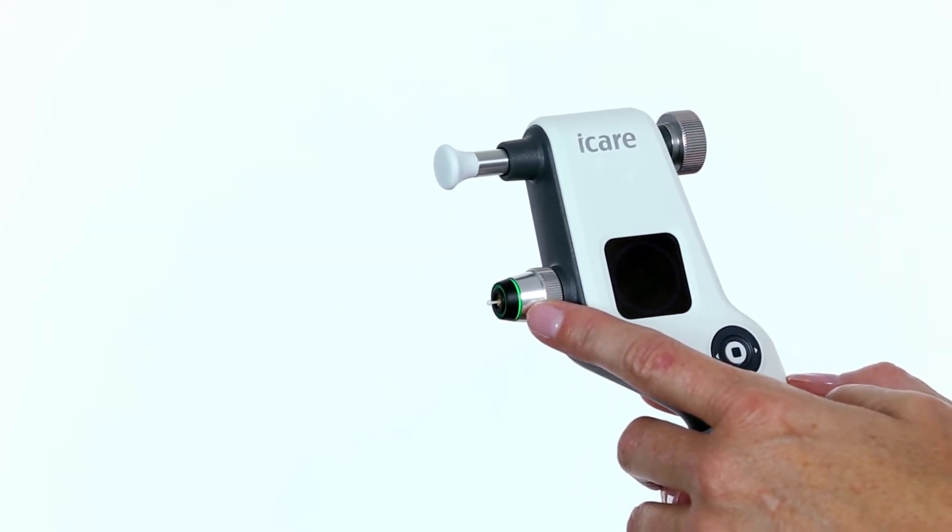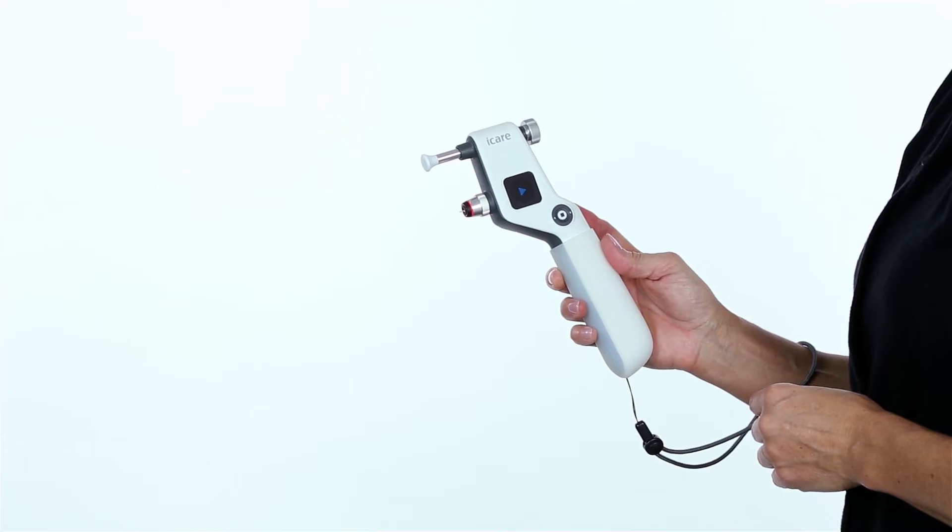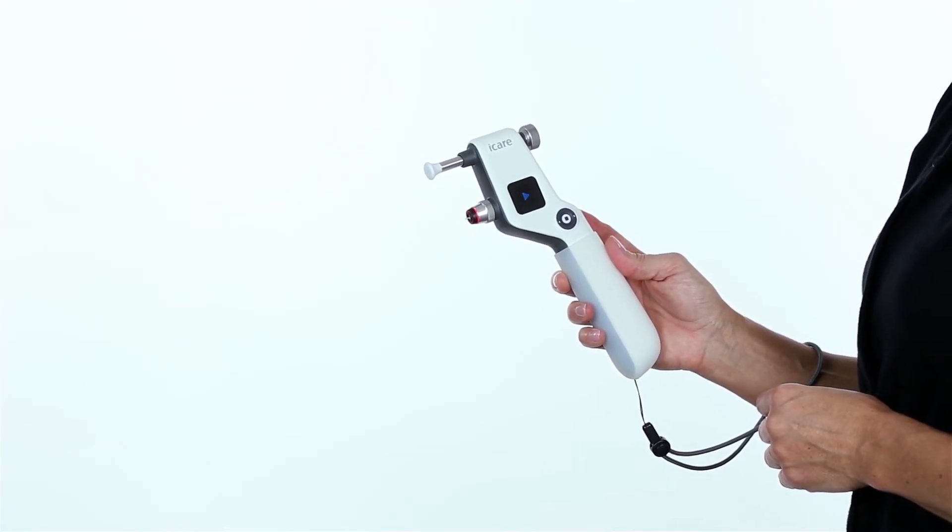The green probe base light indicates proper alignment. If the probe base light is red, the alignment is incorrect.